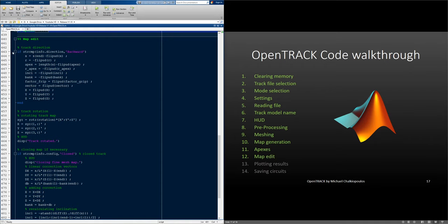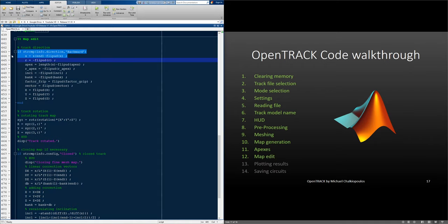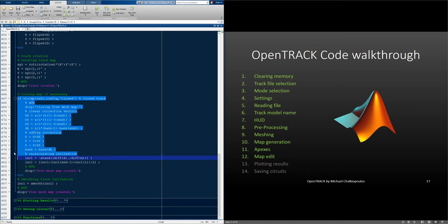Here, we do our final map edit. First, if the direction setting is set to backward, we flip all the vectors accordingly, then we visually rotate the map, and then we proceed to stage 2 of the map closing fix if the track is closed. Here, we calculate the position errors, the banking error, and add the corrections to the position and the banking. Then, we calculate the final inclination, and here we smooth the inclination.